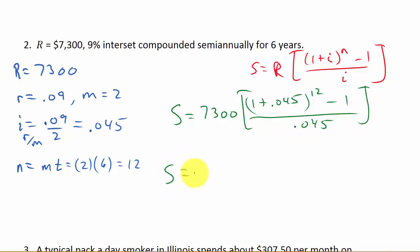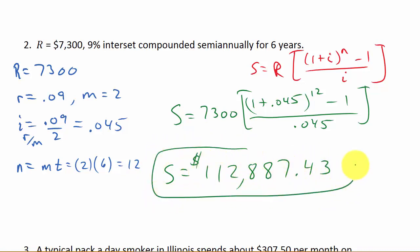Plugging everything in: S equals 7,300 times (1 plus 0.045) to the 12th, minus 1, over 0.045. Punching this into the calculator: 1.045 raised to the 12th, enter, minus 1, enter, divided by 0.045, enter — that gives 15.46403184. Then times 7,300 gives $112,887.43.